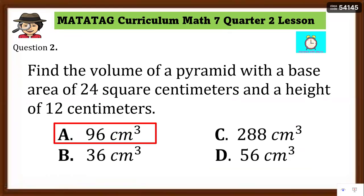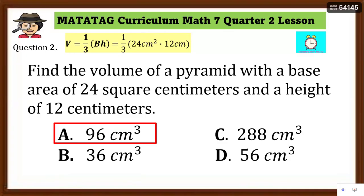Assessment Question 2: The answer is letter A — 96 cubic centimeters. Find the volume of the pyramid with a base area of 24 square centimeters and height of 12 centimeters. Since only the base area is given, use V = (1/3) × base area × height: (1/3) × 24 × 12 = 288 ÷ 3 = 96 cubic centimeters.